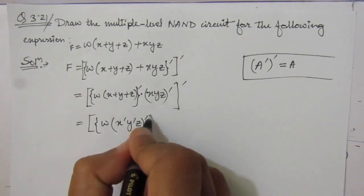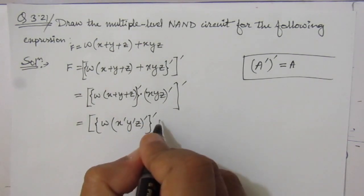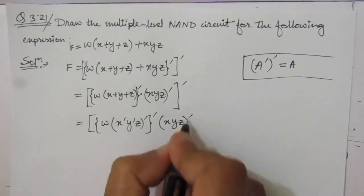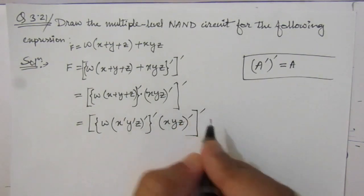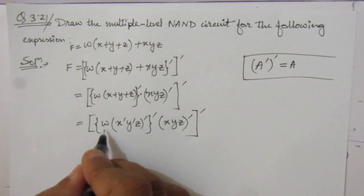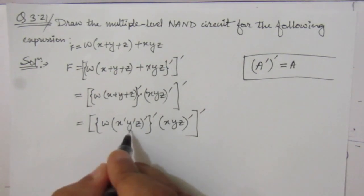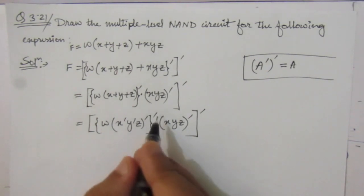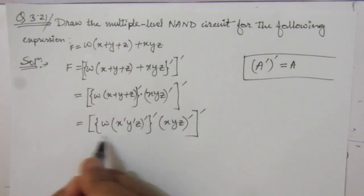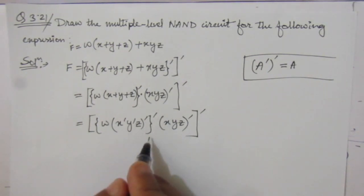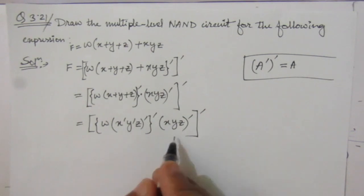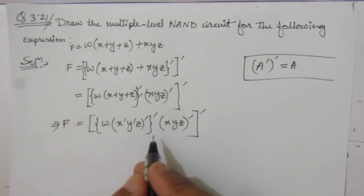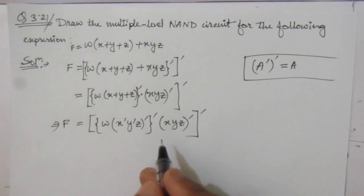So we have another complement here, and then we have xyz whole bar and whole complement. We can see we have one term — suppose A and B — giving A · B whole bar. We can use a NAND gate here. Similarly, if we take one term as A and the other as B, then Ā · B̄ whole bar. So we can implement this function using NAND gates.